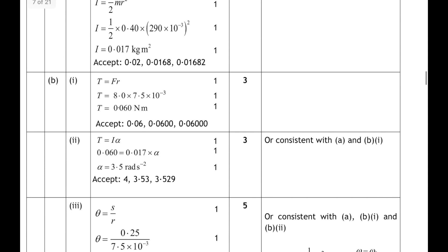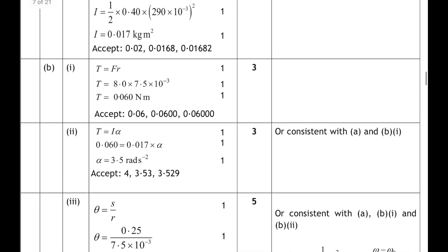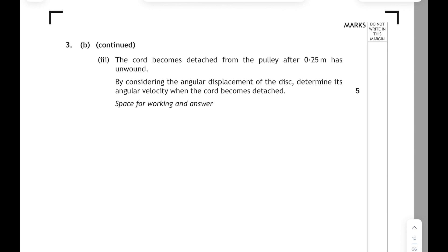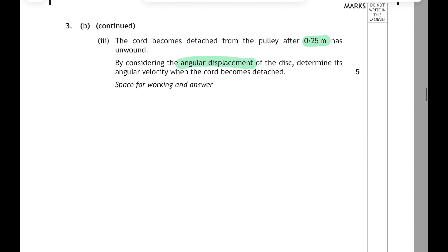Make sure you use the Greek letter tau which is now on your relationship sheet. Then 3 part B part 3: the cord becomes detached from the pulley after 0.25m has unwound. By considering the angular displacement of the disc, determine its angular velocity when the cord becomes detached. This part of the question is worth 5 marks, so it usually involves two calculations leading to the final answer. With talk of angular displacements, angular velocities and linear displacements, we're back to rotational equations of motion.